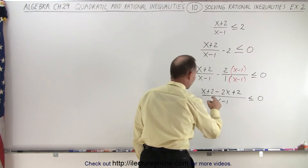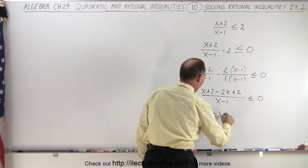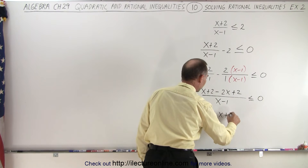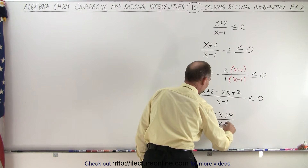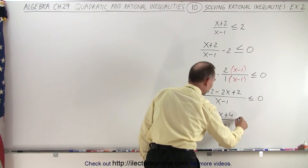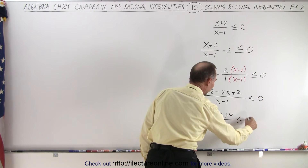Simplifying the numerator, we get negative x plus four, divided by x minus one, less than or equal to zero.